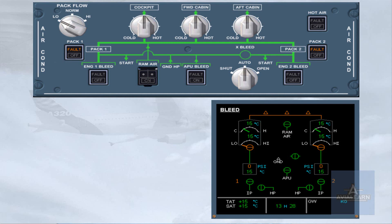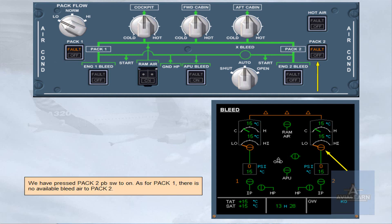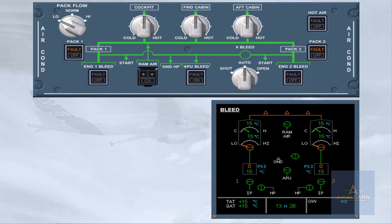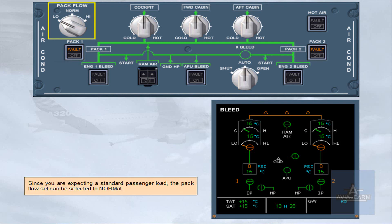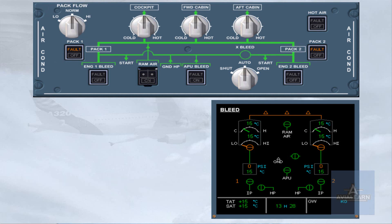We have pressed the PAC2 push-button switch to ON. As for PAC1, there is no available bleed air to PAC2. Since you are expecting a standard passenger load, the PAC flow selector can be selected to normal. There are no changes to the ECAM indications, as the PAC flow selector only affects the PAC flow rate once the engines are running and supplying bleed air to the PACs. We will look at the use of the PAC flow selector later in this module.